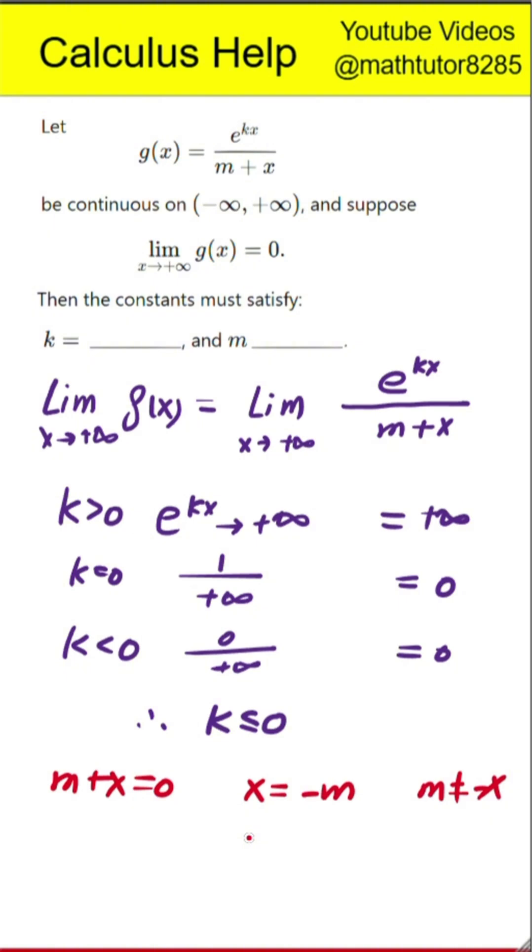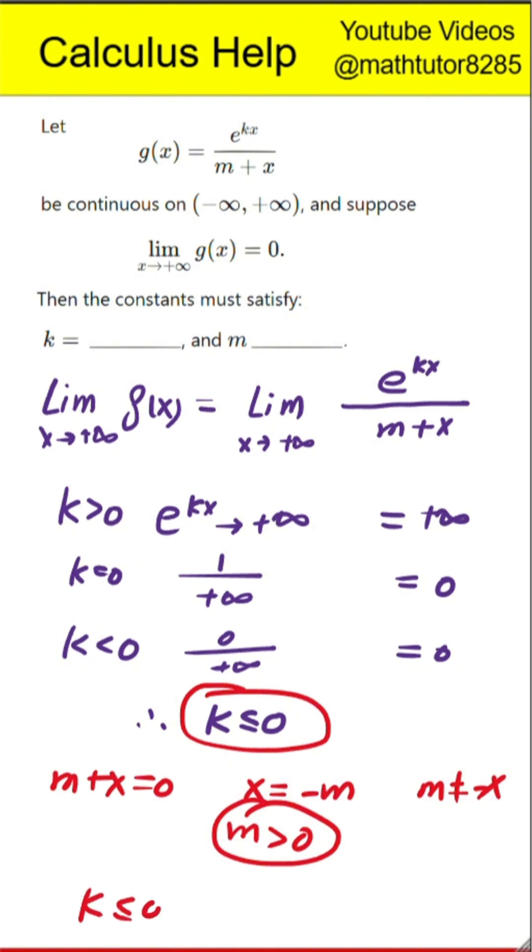That means the constant m cannot be negative, because then there would exist some real x equal to negative m, where the denominator is zero. Therefore, m must be strictly greater than zero.